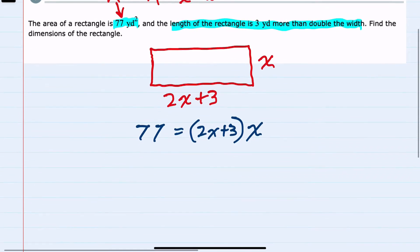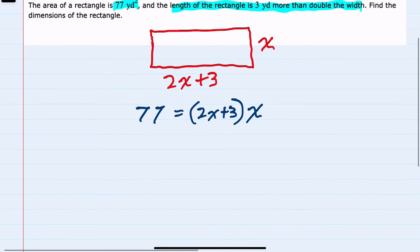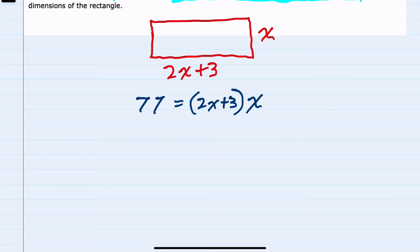And now that we have an equation, we can go about solving. First simplifying the right hand side, we can distribute the x to each of the terms inside the parentheses. So 77 equals 2x squared plus 3x.